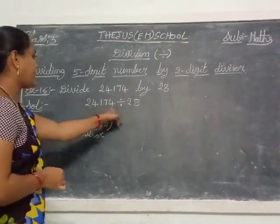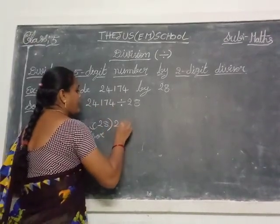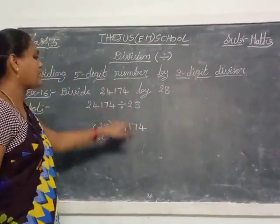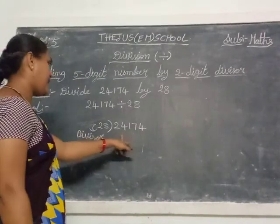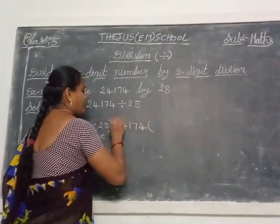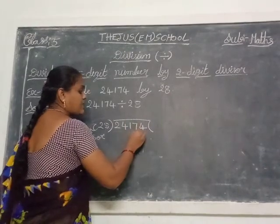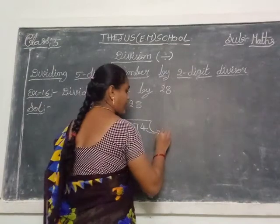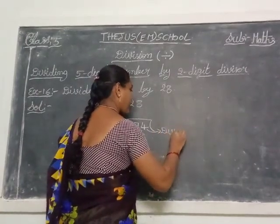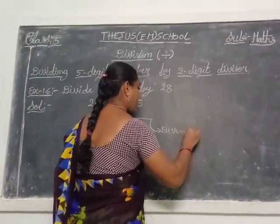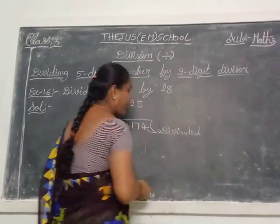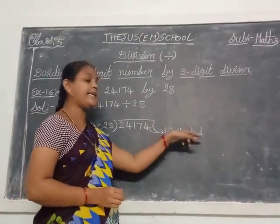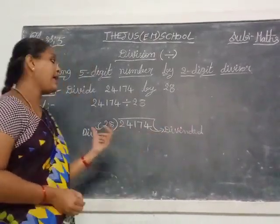And in the middle you write 24,174. Already we said that is the 5-digit number. This is called the dividend. Divisor: D-I-V-I-S-O-R. Dividend: D-I-V-I-D-E-N-D.